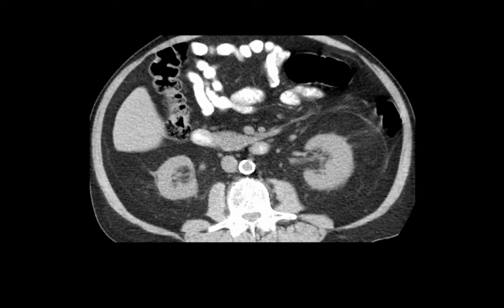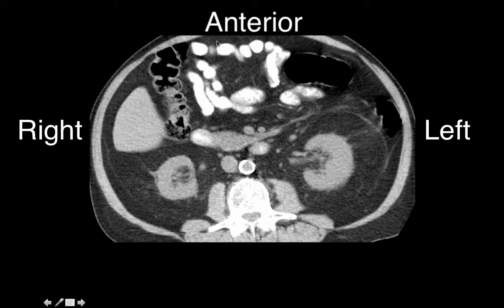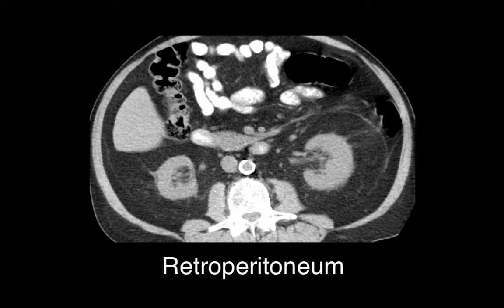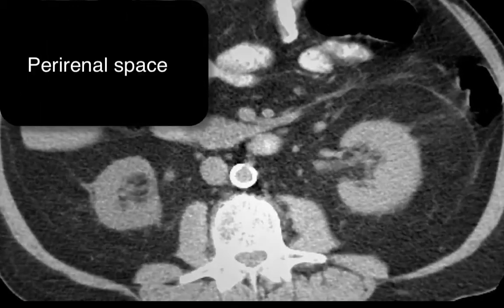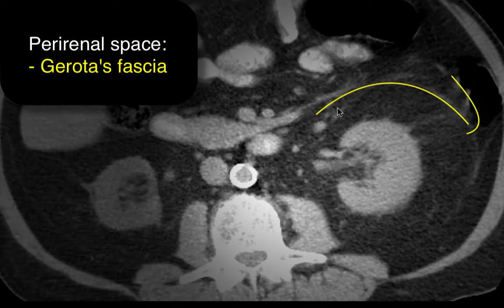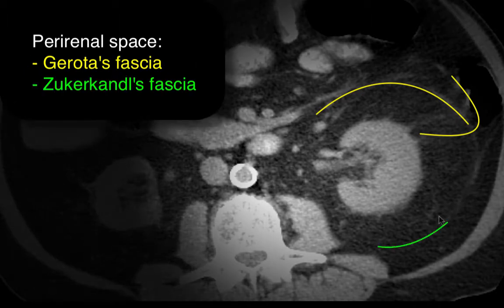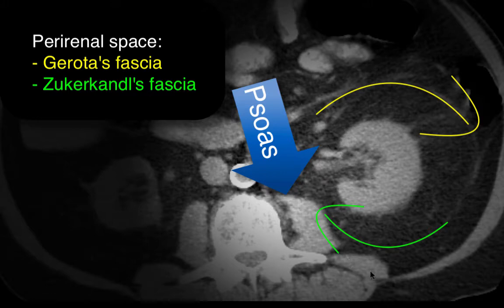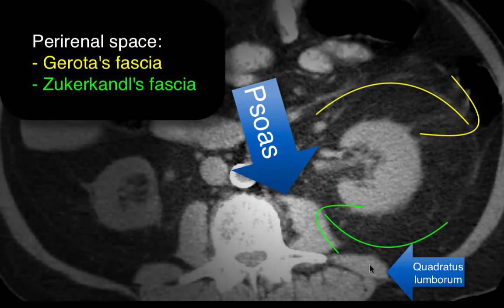This is a CT scan of the abdomen at the level of the kidneys, with the patient lying supine. This is the right side, left side, and this is the anterior abdomen. The kidneys are bean-shaped and located in the retroperitoneum, specifically in the perirenal space. This space is bounded anteriorly by Gerota's fascia and posteriorly by Zuckerkandl's fascia. Medially is the psoas muscle, while posteromedially is the quadratus lumborum muscle.